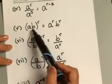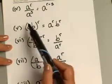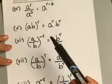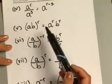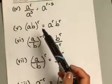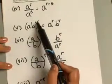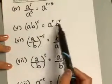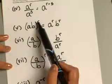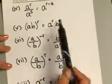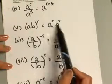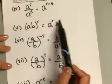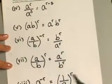This is a neat rule: if you have a and b — two numbers multiplied together — and the whole expression is to some exponent r, it works almost like a distributive property for exponents. The exponent r applies to base a, giving a to the r, and also applies to base b, giving b to the r. You're still multiplying the two bases, but the exponent applies to both of them.